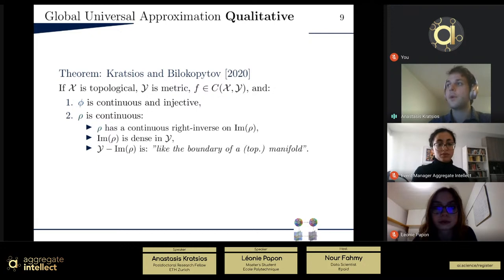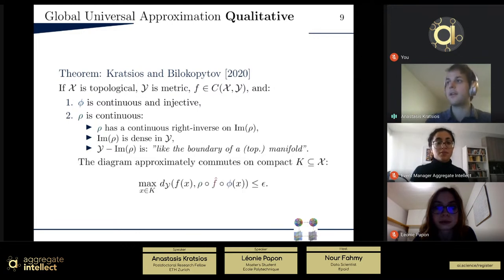But the key thing for the key ingredient here, the subtlety, is that whatever you're not parameterizing, whatever you're missing, that should be not only negligible, but it should be nice. And what that means, it should act like the boundary of a topological manifold. And so I won't say more about this right now, but we'll say more about it in the examples.